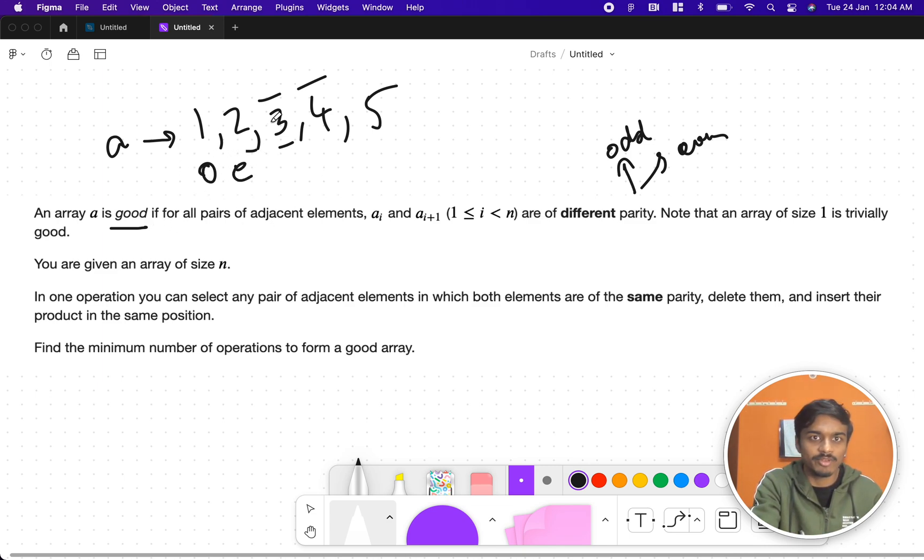So here let's say odd, even, 3 is odd, 4 is even, and 5 is also odd. Is this a good array? Yes because all the adjacent elements are of different parity. So what can be a case that is wrong? Let's suppose 2, 4, 6 - even, even, even. This is not a good array because adjacent elements are of same parity. Note that an array of size 1 is trivially good obviously. If there is only one number, let's say 10, it doesn't have any adjacent elements so it's eventually a good array.